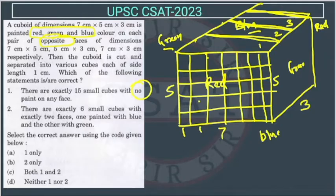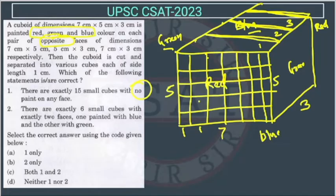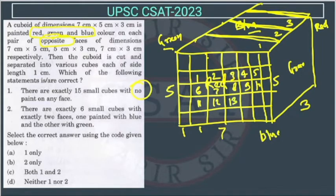All sides are painted, so the middle side is also painted. But in this middle layer, the middle ones — 1, 2, 3, 4, 5, 6, 7, 8, 9, 10, 11, 12, 13, 14, 15 — these are not painted. The border cubes of the middle layer are painted, but the interior ones are not.